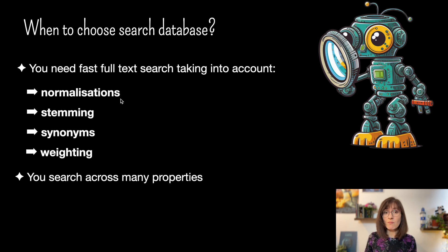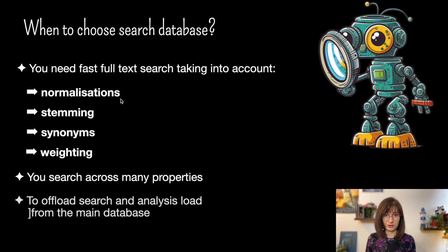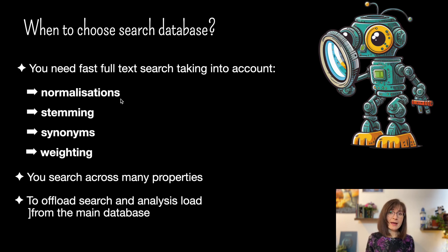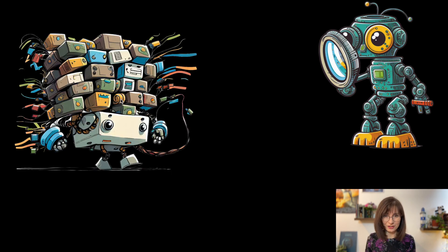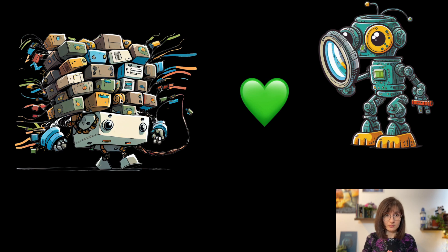A far more common scenario for effective usage is to combine a search engine database with a relational database in your system. This allows you to offload the computational power needed for search operations, removing types of operations that can potentially make the relational database slower. For example, when your user is trying to do a simple profile update, you don't want them to wait just because your analysts decided to run complex search queries. This is why it is common to use both a relational database and a search engine database in tandem. This approach allows your system to efficiently store, update and retrieve data while also swiftly processing large amounts of data for searching and aggregating purposes.